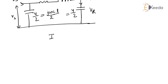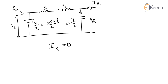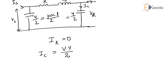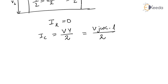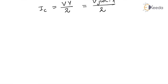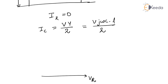Under light load condition, IR equals zero. The charging current IC equals Vr·(Y/2), where Y equals jωC·L/2. Now drawing the phasor diagram taking Vr as reference, IC is 90 degrees perpendicular to Vr.